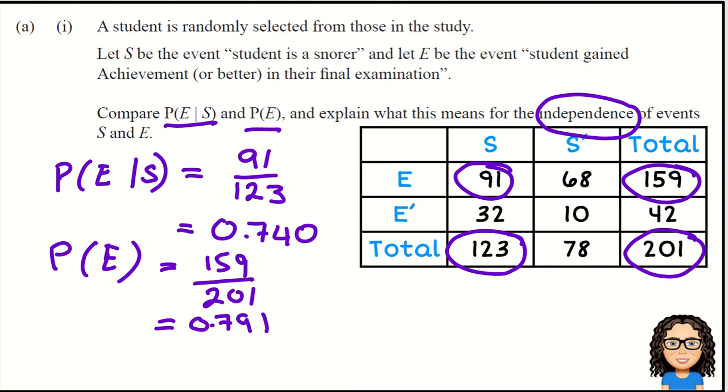In terms of independence, one of the rules for independence says if two events are independent, then given some more information, that should not change my probability. If the probability of an event is equal to the probability of the event given further information—given snoring—if that is true, then they are independent.